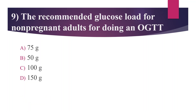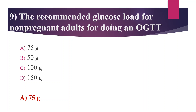Ninth question: The recommended glucose load for non-pregnant adults for doing an OGTT — OGTT stands for oral glucose tolerance test — Option A: 75 gram, Option B: 50 gram, Option C: 100 gram, Option D: 150 gram. Answer is Option A, 75 gram. OGTT is the confirmatory test for detecting diabetes mellitus. The glucose load is 75 gram anhydrous glucose in 250–300 ml of water. As per current WHO recommendations, three samples are collected: one at fasting, first hour, and second hour post-glucose load.